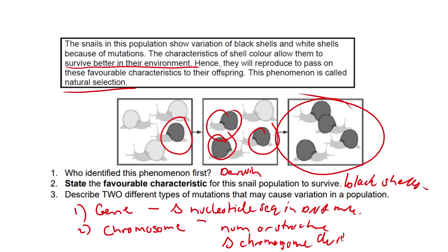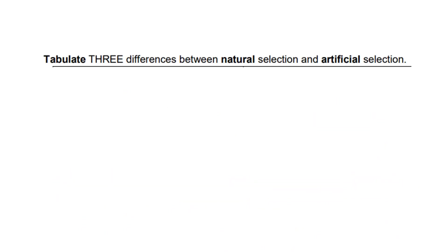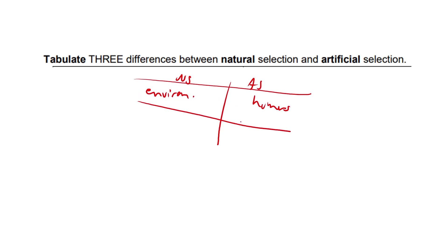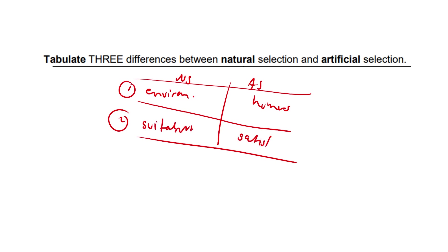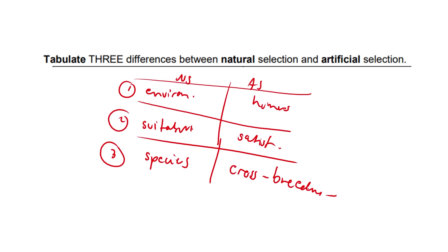Tabulating three differences between natural and artificial selection: First, the selective force — in natural selection it is the environment or nature; in artificial selection it is humans. Second, natural selection is in response to suitability to the environment; artificial selection is in response to satisfying human needs. Third, natural selection occurs within a species; artificial selection may occur in more than one species — this is called crossbreeding.